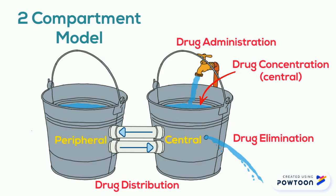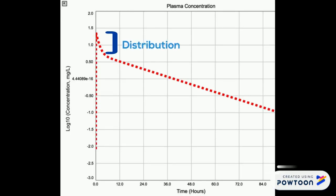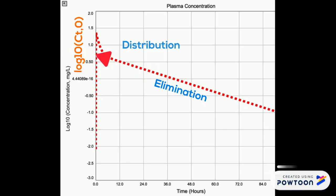The drug can pass between the two compartments, but we can only measure drug concentration within the central compartment, which includes the vascular compartment. When dealing with a two-compartment model and we plot the logarithm of drug concentration versus time, we get a curve where early on there is a more rapid decline associated with distribution of the drug into the peripheral compartment. While a two-compartment model better fits the behavior of most drugs, the assumptions of a one-compartment model — immediate distribution — are adequate for most clinical purposes.